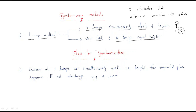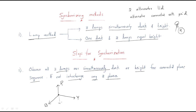The first step for synchronization: observe all three lamps are simultaneously dark or bright for connected phase sequence. If not, interchange any two phases. For example, we have R phase, Y phase, and B phase, and on the other side R dash, Y dash, and B dash paths.